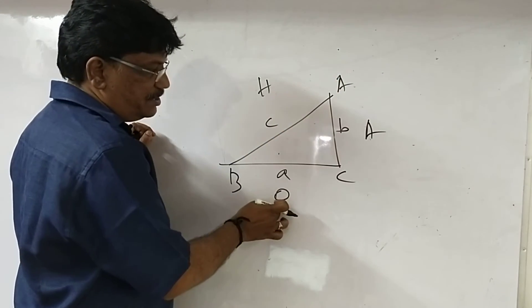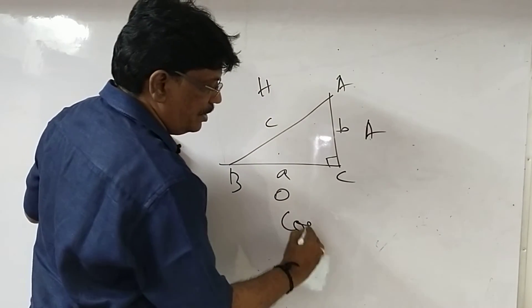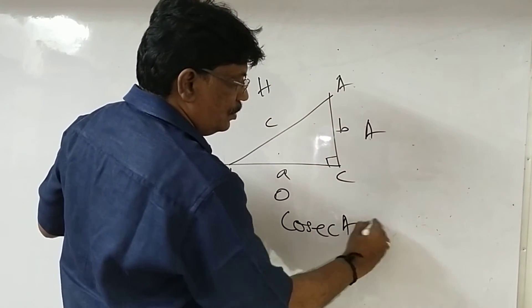For angle A, the opposite side, the greater side is hypotenuse, this is adjacent. They are asking cosecant A.